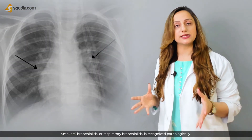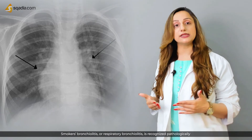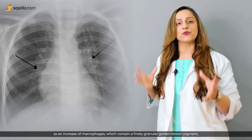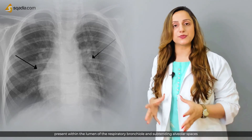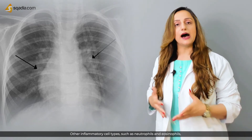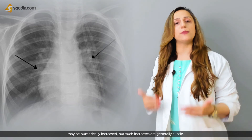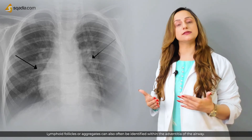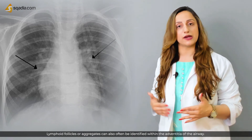Smoker's bronchiolitis, or respiratory bronchiolitis, is recognized pathologically as an increase of macrophages containing a finely granular golden-brown pigment present within the lumen of the respiratory bronchiole and subtending alveolar spaces. Other inflammatory cell types such as neutrophils and eosinophils may be numerically increased, but such increases are generally subtle. Lymphoid follicles or aggregates can often be identified within the adventitia of the airway.